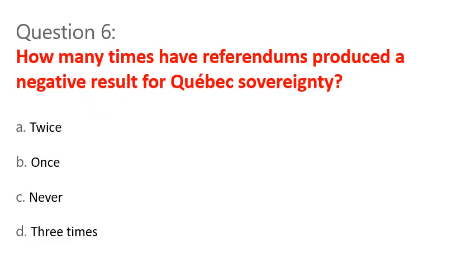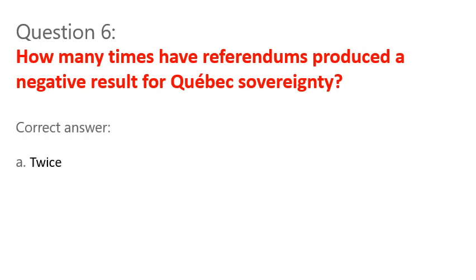Question 6. How many times have referendums produced a negative result for Quebec sovereignty? A. Twice. B. Once. C. Never. D. Three times. Correct answer: A. Twice.